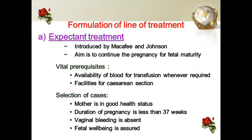What is the expectant treatment? The aim is to continue the pregnancy if the fetus has not attained maturity. Blood for transfusion and facilities for caesarean section must be available. Mothers selected for expectant treatment should be in good health, have a pregnancy less than 37 weeks, have absent vaginal bleeding, and assured fetal well-being.